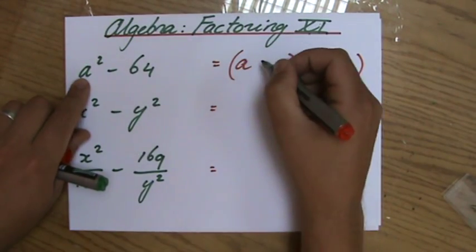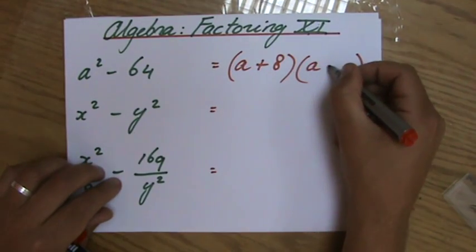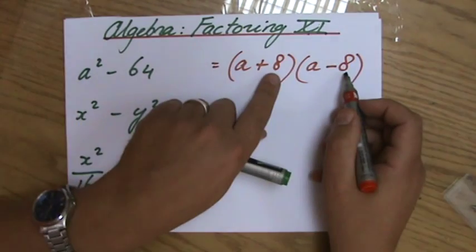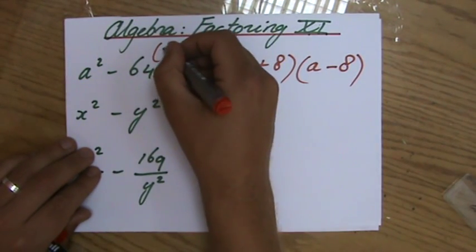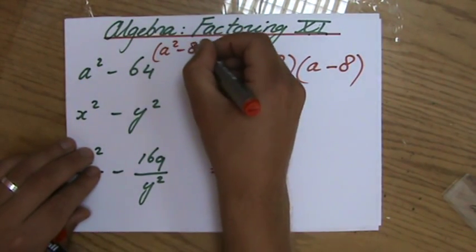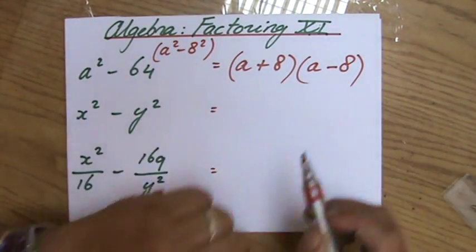If you factorize it, it's basically the roots plus 8, a minus 8. Why 8? Because 8 squared is 64. You could rewrite that as a squared minus 8 squared. The difference of two squares: a plus 8, a minus 8.